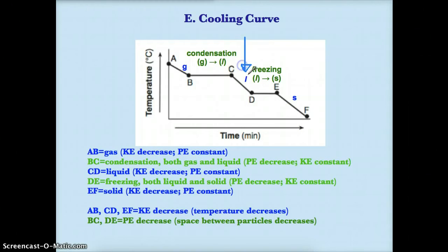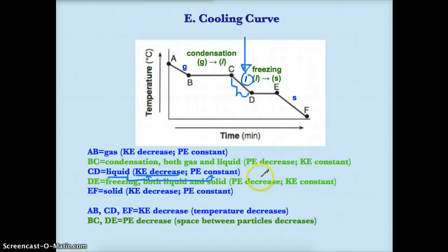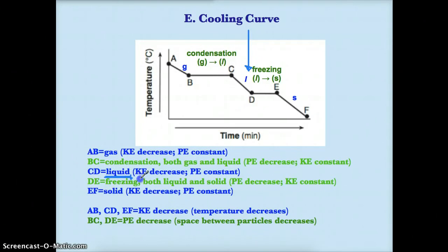CD, the second negative slope on any cooling curve, is a liquid. The kinetic energy decreases because the temperature is decreasing. Since you only have one phase — liquid — the potential energy must be constant because the phase isn't changing. In summary: the second negative slope is liquid, kinetic energy decreases because the temperature goes down, and potential energy is constant.